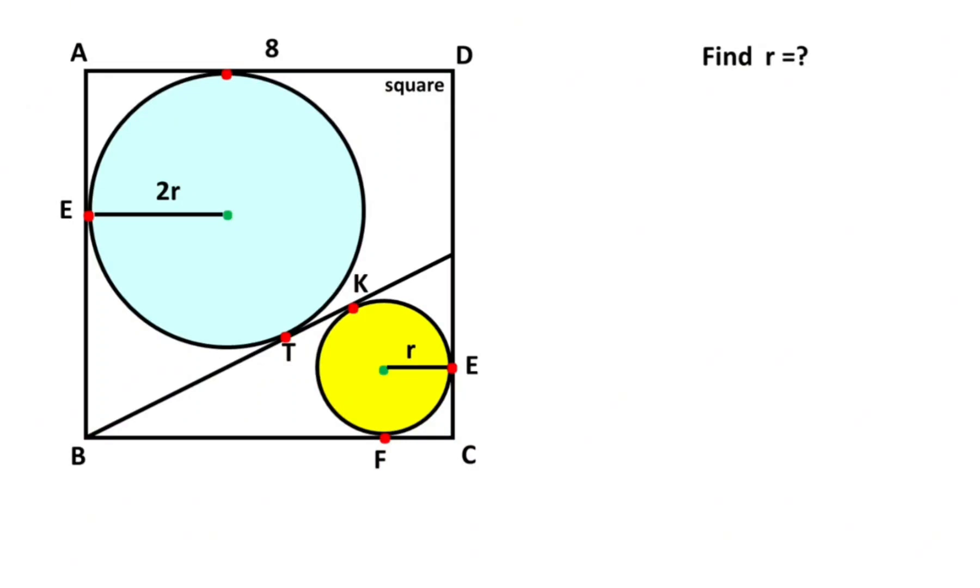Hello everyone. In this video we have one square, two circles. One side of the square is given as eight. The ratio of the radius of the circles is given as two, and these red points are given as tangent points.